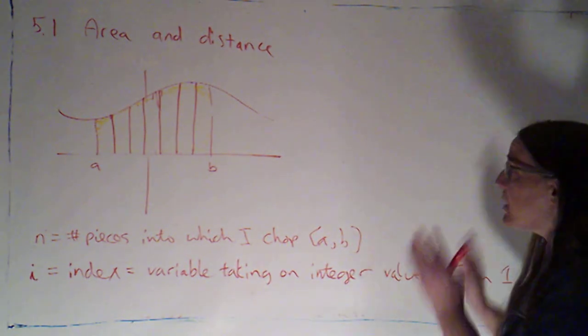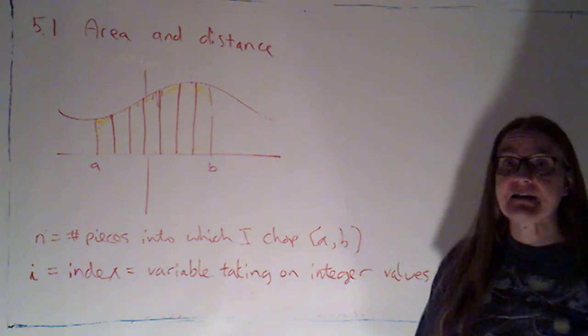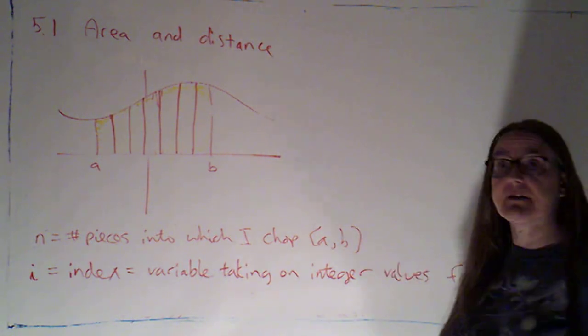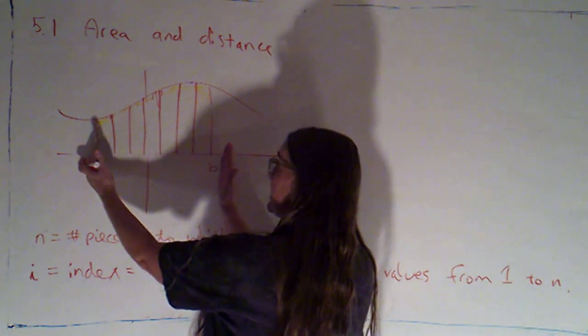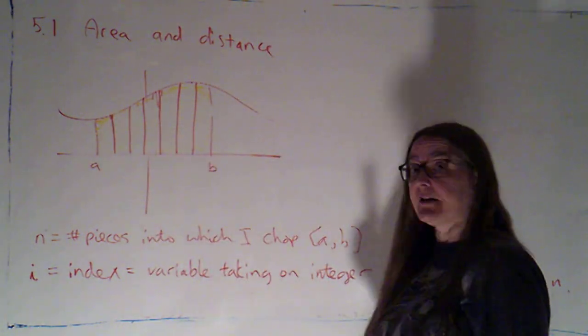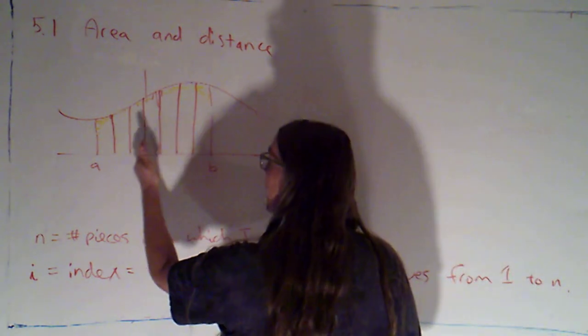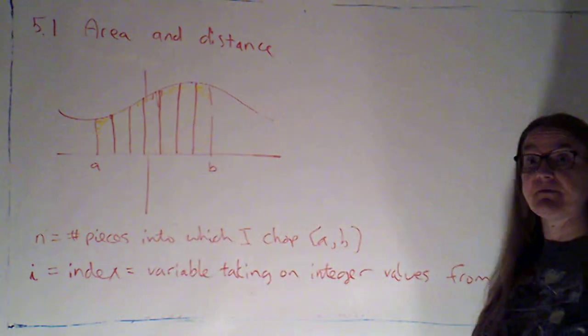Okay, all right, so we have completed step one. Step one was to chop things up into little pieces. So we created a partition of the interval from a to b. We chopped the x-axis into little pieces, and that induced a chopping of the area into little strips of area.